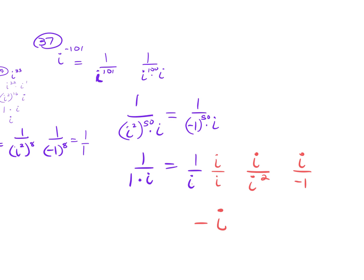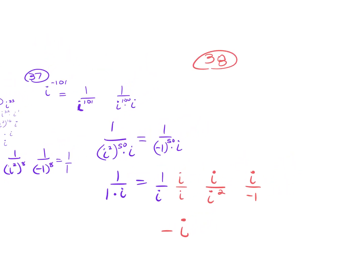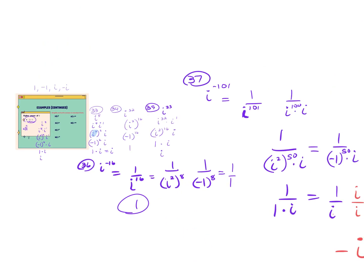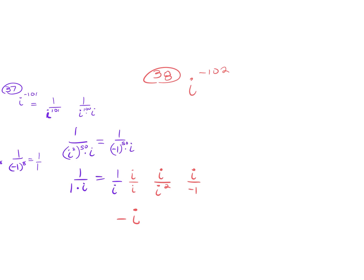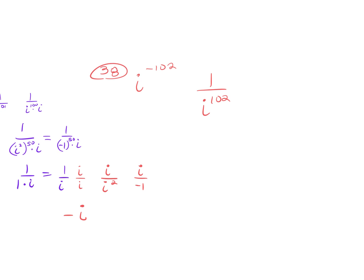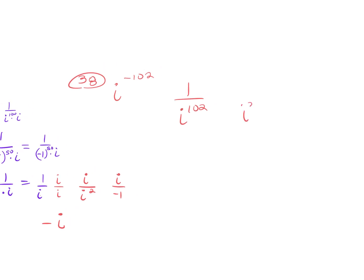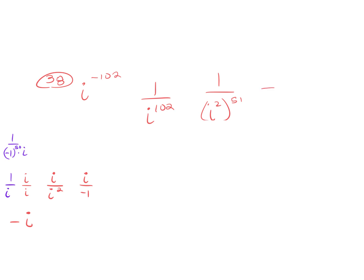For number 38, i to the negative 102: negative exponent means make it a fraction. Then divide 102 by 2 to get i squared raised to the 51st power. Change i squared to negative 1. Now negative 1 is raised to an odd exponent, so it stays negative 1. Then 1 divided by negative 1 gives a final answer of negative 1.